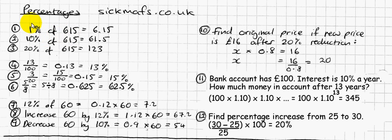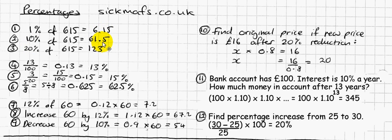Those two crucial things will help you work out any sort of percentage you want. 1% of 615 — all you do is move the decimal point two places, because 1% means one hundredth, and to work out one hundredth of something you just divide it by 100. To work out 10%, you basically just divide it by 10, so move the decimal point one place instead.